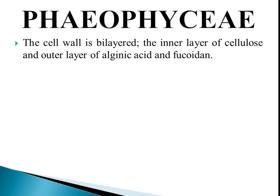The cell wall is bilayered: the inner layer is composed of cellulose and the outer layer of alginic acid and fucoidan. Unlike plant cell walls or green algae which have three layers, here the middle laminar layer is absent.